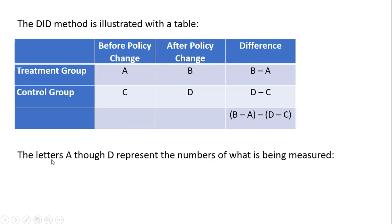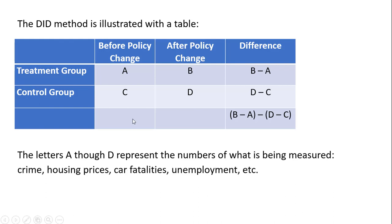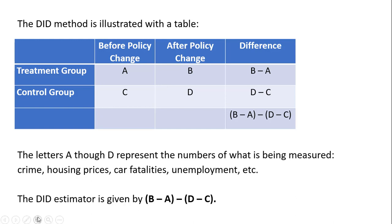The letters in the table represent the numbers of what is being measured. It could represent crime rates, housing prices, car accidents, car fatalities, unemployment rates, employment rates, etc. The difference-in-differences estimator is given by the bottom cell. I will do a numerical example in just a minute.